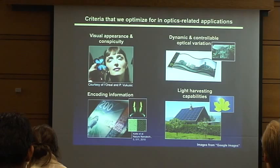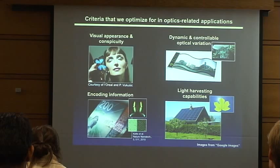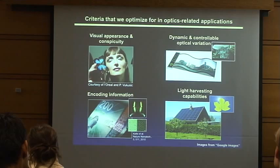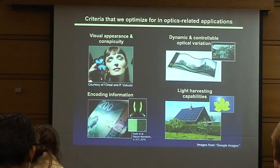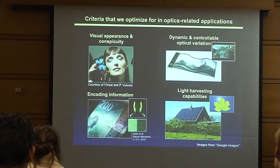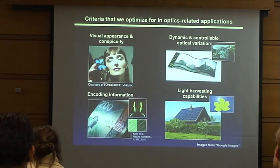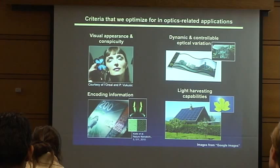Why would these be interesting for artificial applications? Nature optimizes for visual appearance and beauty — relevant for films and paints. It optimizes for control of the optical signal, which is interesting for displays. Its materials are flexible and elastic, which is good for tunable, flexible displays. Nature encodes information in optical patterns — for example, a butterfly uses curved concavities with multilayer reflectors, and because of curvature the light differs between concavities, giving interesting polarization effects useful for security encoding. And light harvesting is relevant for solar cells and energy conversion.